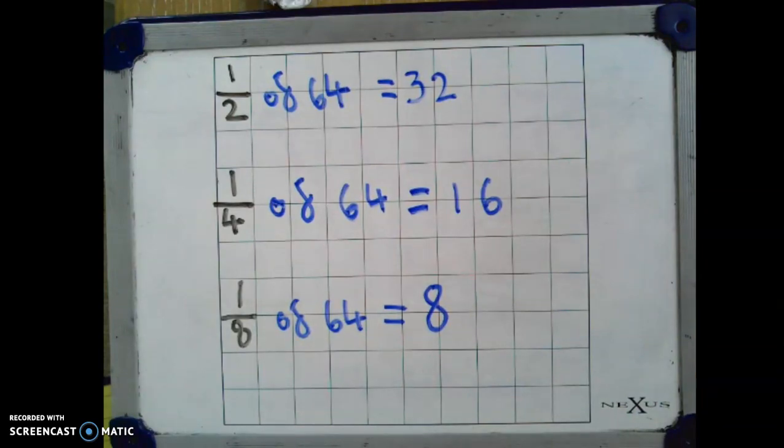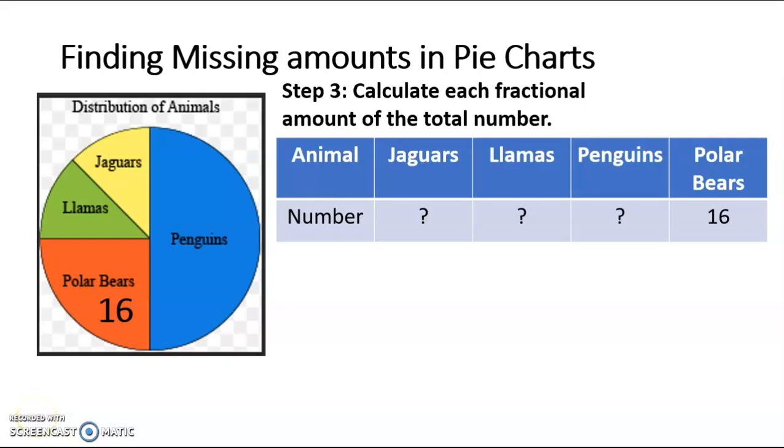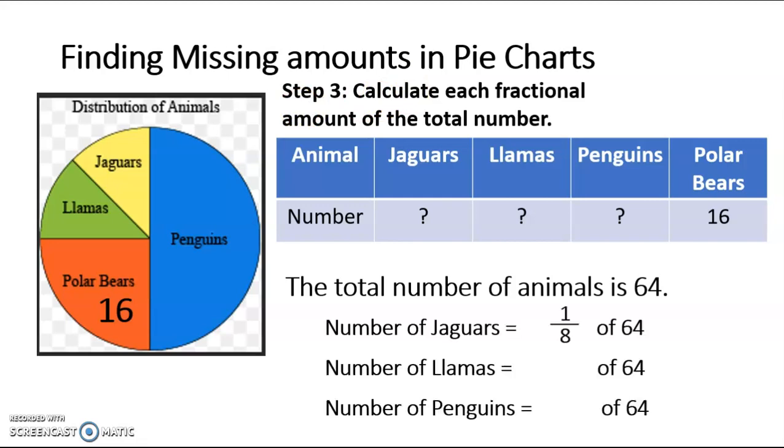So, using that information, we can now state how many of each type of animal there are. So, we know the total number of animals is 64. One eighth of them are jaguars. One eighth of 64 is 8. Also one eighth of them are llamas. One eighth of 64 is 8. Half of them are penguins. Half of 64 is 32.